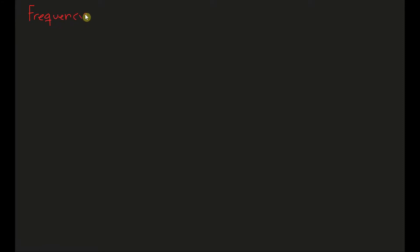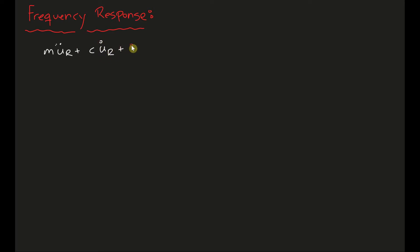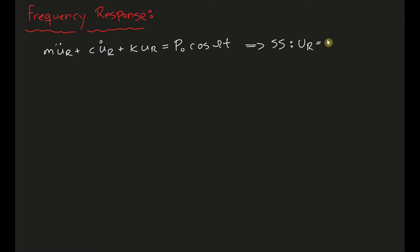Now we have enough background on what frequency domain means. We're going to talk about complex frequency response functions, and we want to dive into this in a more mathematical way. I'm going to write two equations of motion. One of them is going to have the degree of freedom U_R, which is a vector projected on the real axis, and it will have an input excitation with a cosine in it. Whenever your input excitation has a cosine, your steady state response will also have a cosine.